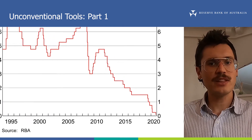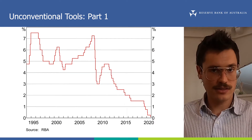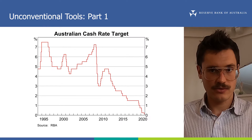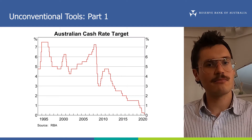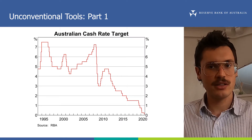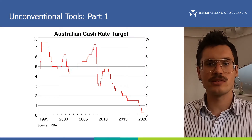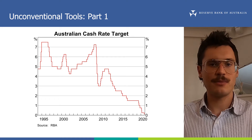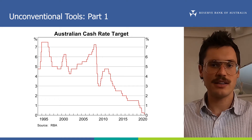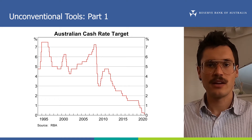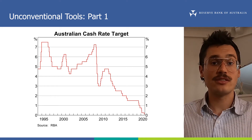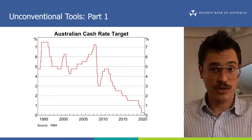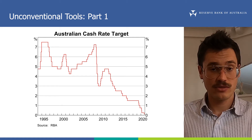But even with the cash rate at its lowest practical level, the Reserve Bank Board decided that monetary policy could do more to support the economy and help the RBA meet its objectives. So in response, the RBA has turned to other monetary policy tools.